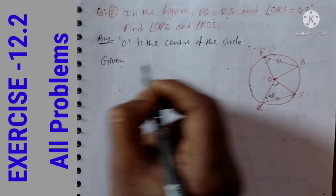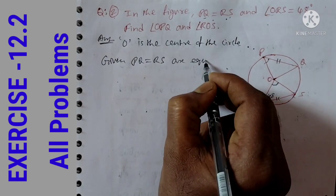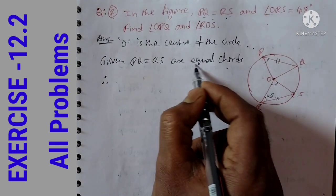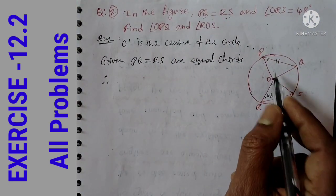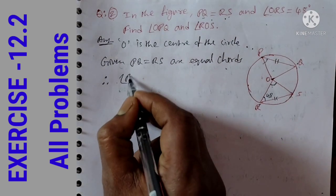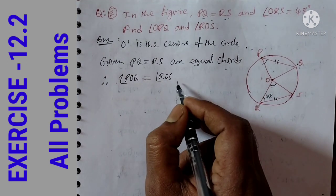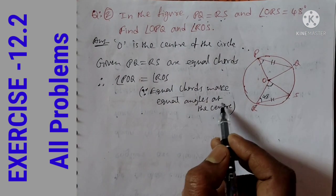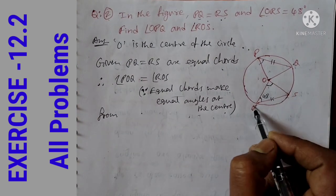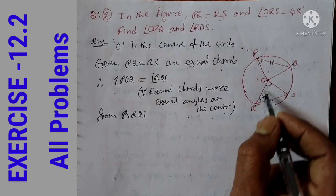Given: PQ is equal to RS, so they are equal chords. Since equal chords make equal angles at the center, angle POQ is equal to angle ROS. Now, from triangle ROS, we apply the angle sum property.